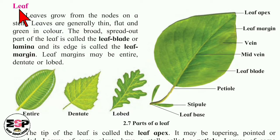In this lesson, we are learning about the parts of the plants which form its structure and the function of each and every part. In the previous part, I taught you about the root and stem. Now in this video, we are going to learn the third part, that is leaf — its structure and function in detail. So let's start, children.